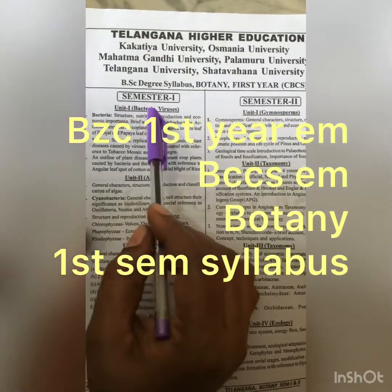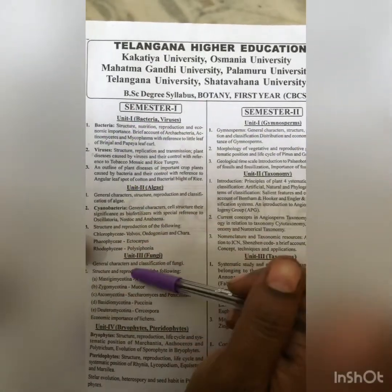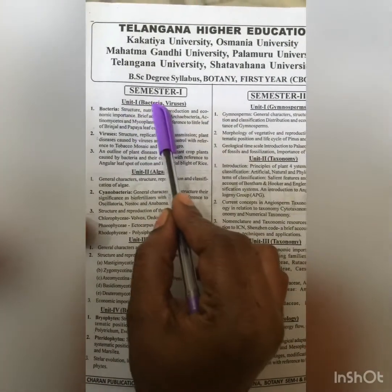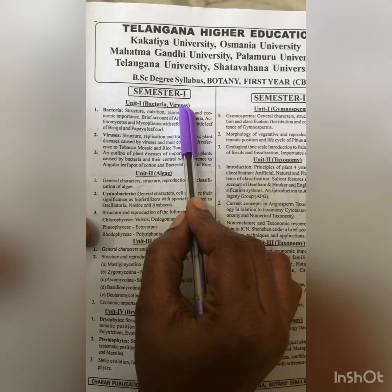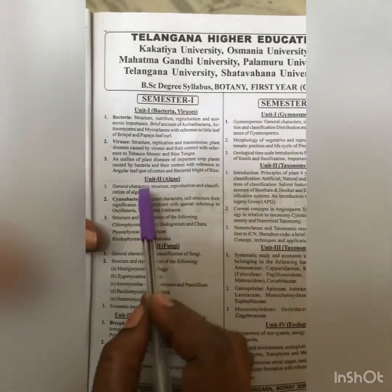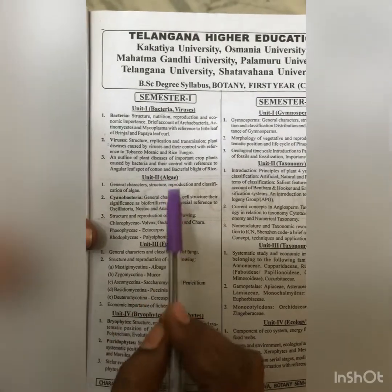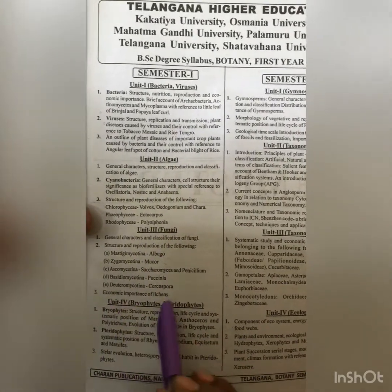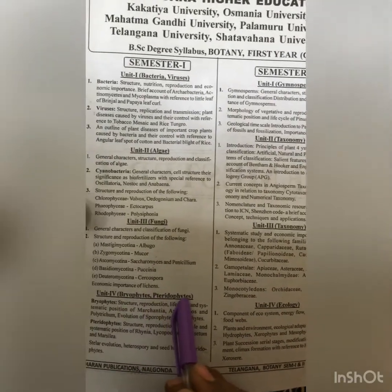Mr. Selvas of Botany. Here 4 units are there. First 2 units are bacteria and viruses, then second unit is algae, third unit is fungi, and fourth unit is bryophyta and pteridophyta.